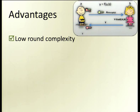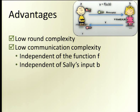This protocol has several advantages over regular and classical MPC protocols. First, it has really low round complexity — only two rounds: one message from Charlie to Sally and one message back. In addition, it has really low communication complexity. All the information sent is the public key, encryption of input, and encryption of output, which is independent of the complexity of the function f that the parties compute.